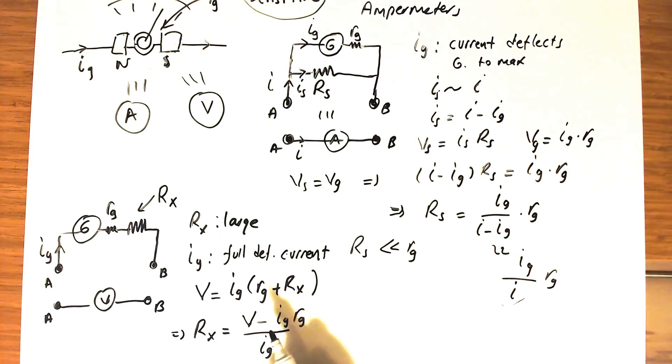If you want to measure some voltage V, you have to select a resistance using this formula: Rx = (V - IG·Rg)/IG. This IG is the current that deflects the galvanometer to the maximum position and is always a very small value. Both IG and Rg are small.